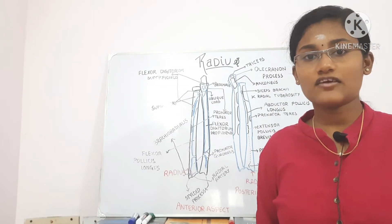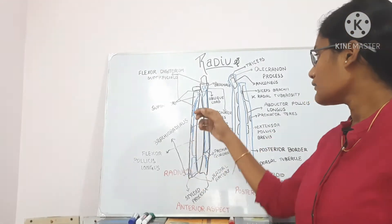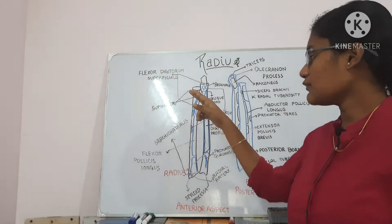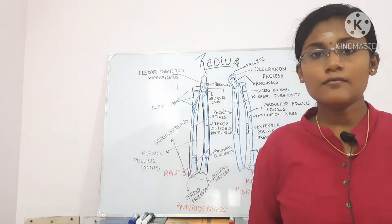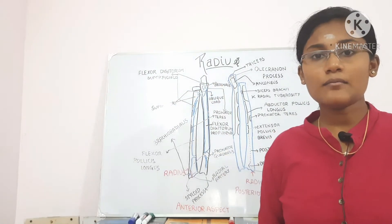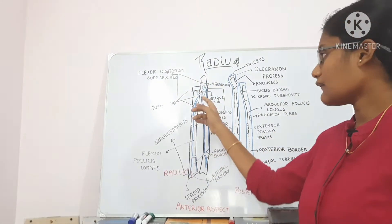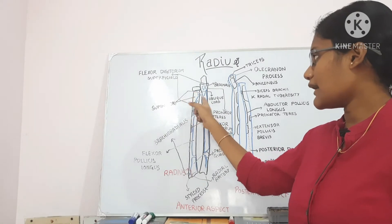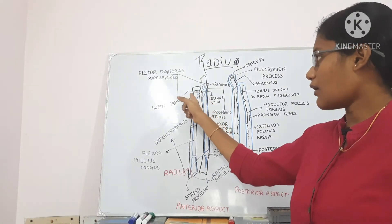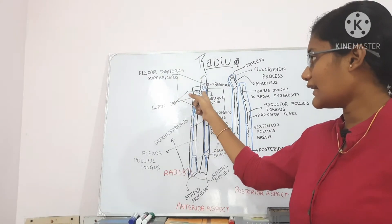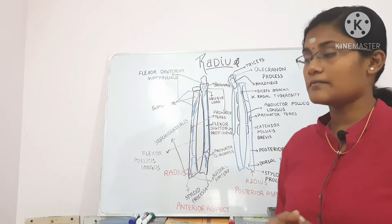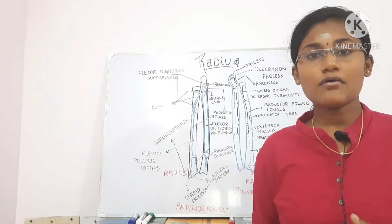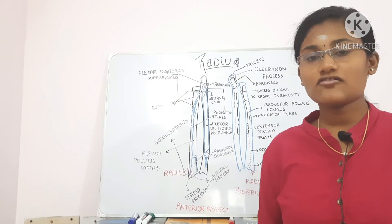The smooth anterior part gives attachment to a small synovial bursa — a bursa means a fluid-filled cavity which helps reduce friction. The supinator muscle is present on the lateral side of the upper end, just opposite to the radial tuberosity.